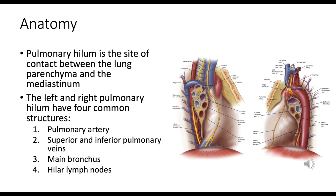Variations between right and left hila: the right main bronchus is wider, shorter, and more vertical than the left, making aspirated objects more likely to enter the right bronchus. The left pulmonary artery may be located superiorly or at the same level as the main bronchus, whereas on the right side the pulmonary artery is always superior. Radiologic examination of the hila — via chest x-rays or CT scans — is crucial in diagnosing conditions related to the heart, lungs, and great vessels.